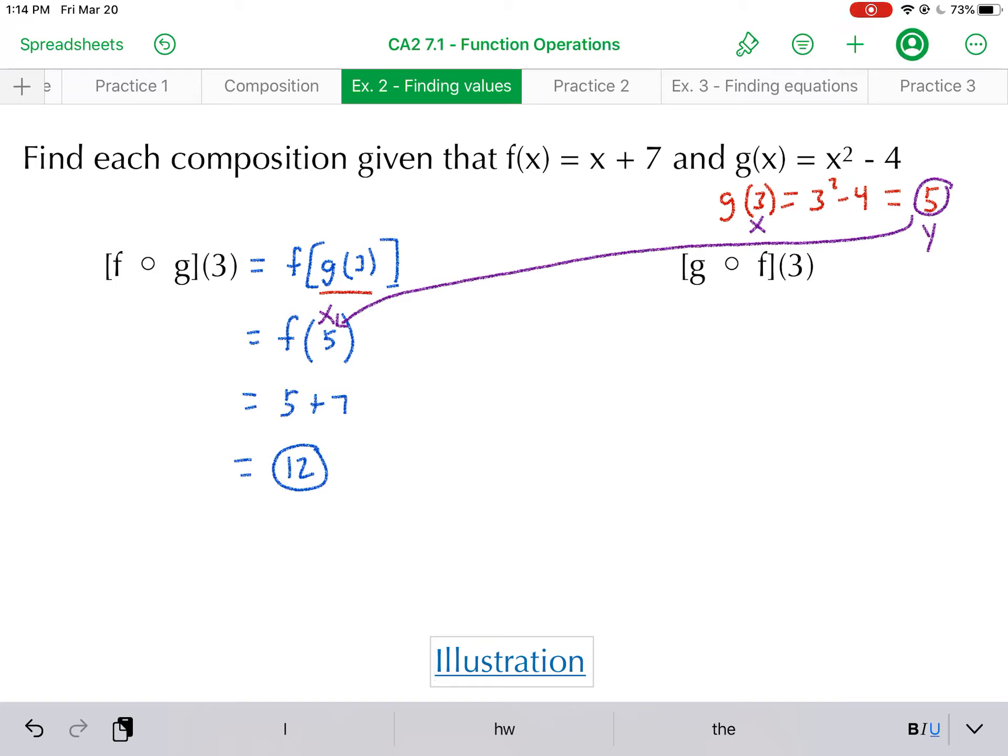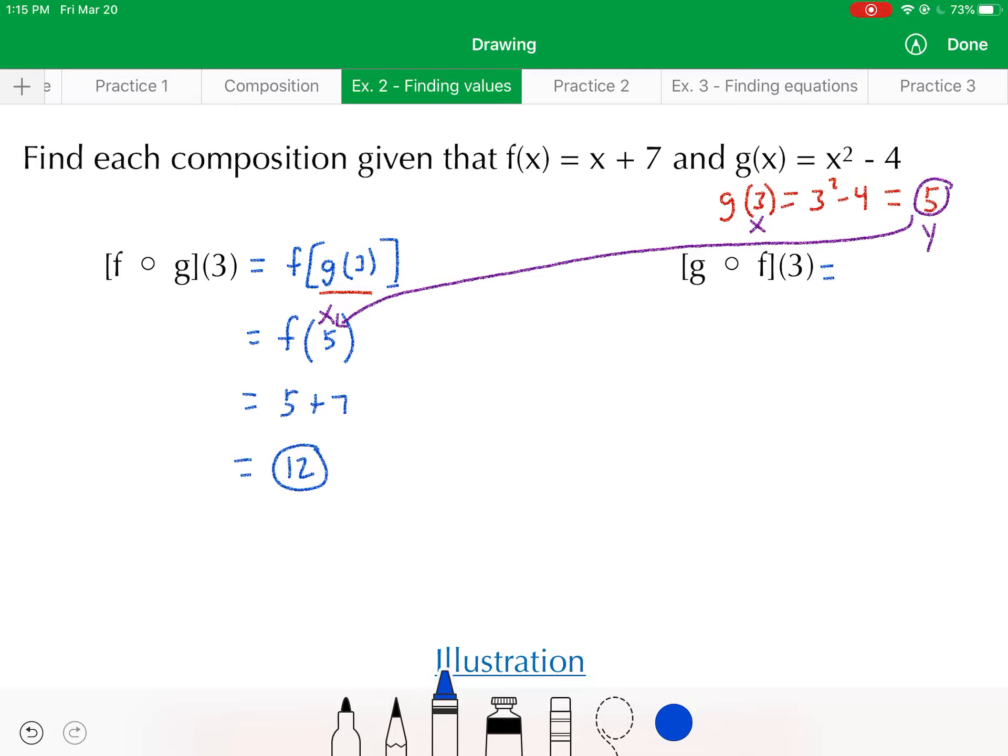All right, now let's go in the other direction. So now I'm trying to find g composed of f of 3. That would be the same as finding g of f of 3. So this time I would say the inner function is f. And I'll find f of 3. That's 3 plus 7 or 10. So by substitution, I can think of this as g of 10 now. And g of 10 would equal 10 squared minus 4. So that's 100 minus 4, or 96.